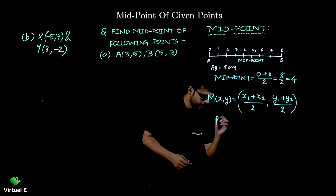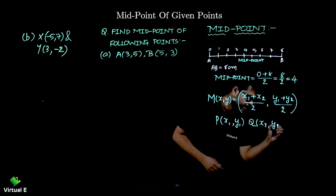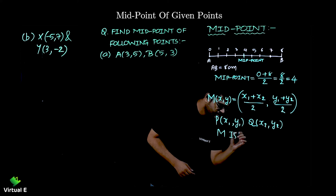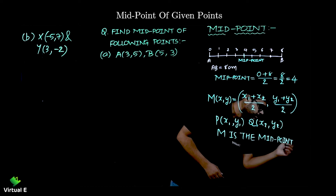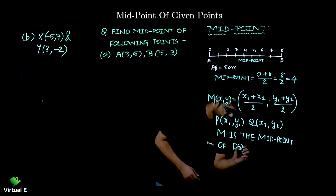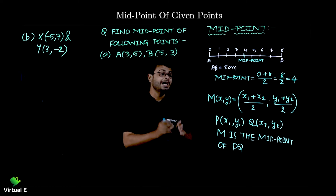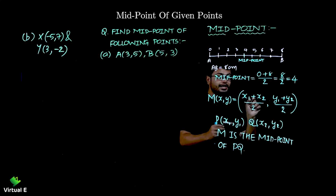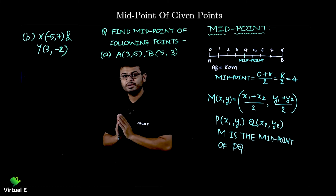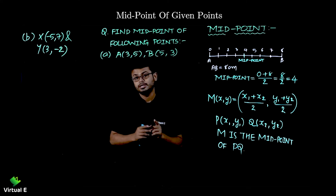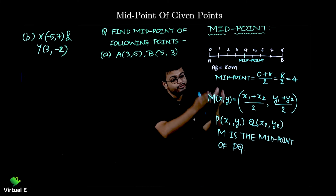Let's say we take point P as (x1, y1) and Q as (x2, y2), then M is the midpoint of line PQ. To find it, add their x-coordinates and divide by 2, and add their y-coordinates and divide by 2. This is very simple. These questions are asked for one mark — either find the midpoint given two coordinates, or find a missing coordinate given the midpoint.